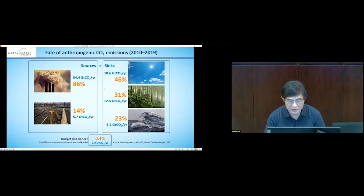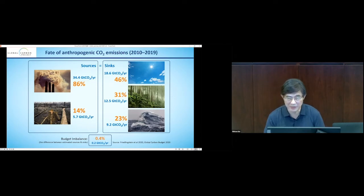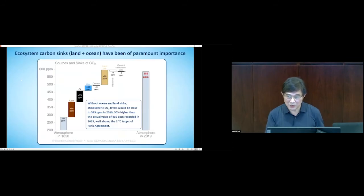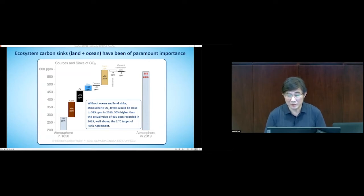We're all familiar with anthropogenic CO2 emitted from fossil fuel burning and land use change. That CO2 accumulates in the atmosphere, causing the greenhouse effect, with the rest going into the terrestrial and marine ecosystems. If you track back to the pre-industrial era, atmospheric CO2 started at 280 ppm. Adding fossil fuel emissions — coal, oil, and so on — without the ocean and land sinks, atmospheric CO2 now would be close to 600 ppm, already 50% higher than the actual measured value. So the land and ocean ecosystem sink is of paramount importance.